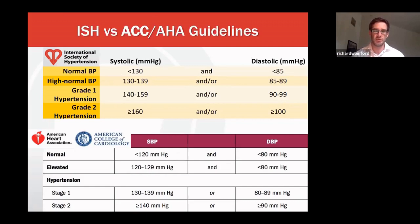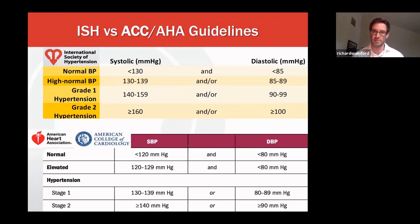The major difference between the two guidelines is shown when we talk about hypertension. Grade one hypertension in the International Society of Hypertension guidelines is defined as a systolic blood pressure of 140 to 159 mmHg and/or a diastolic blood pressure of 90 to 99 mmHg. This differs from the AHA guidelines and has implications for the initiation of treatment in hypertensive patients.